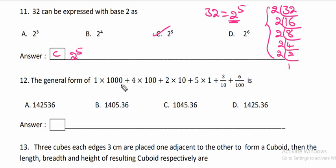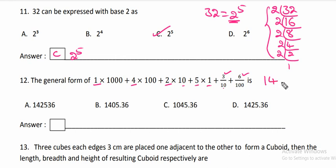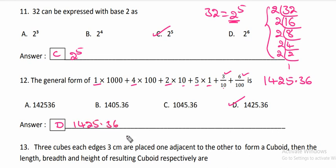The general expanded form: 1 is in the thousands place, 4 is in the hundreds place, 2 is in the tens place, 5 is in the units, and 3 is in the tenths place. That is option D — 1425.36 is the correct answer.